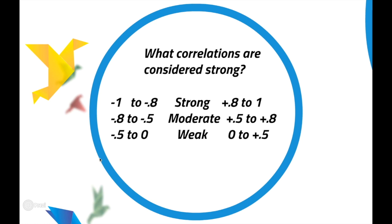A few more things to cover in this opening lesson. What correlations are considered strong? Some textbooks state that anything between negative 0.8 to negative 1, or positive 0.8 to positive 1, is a strong correlation. Between negative 0.8 to negative 0.5 or positive 0.5 to positive 0.8 is considered moderate or medium strength. Anything between negative 0.5 to positive 0.5 is considered weak correlation. If you see a weak correlation, it could indicate that a line of best fit would be pretty much doomed in terms of explaining the data accurately.